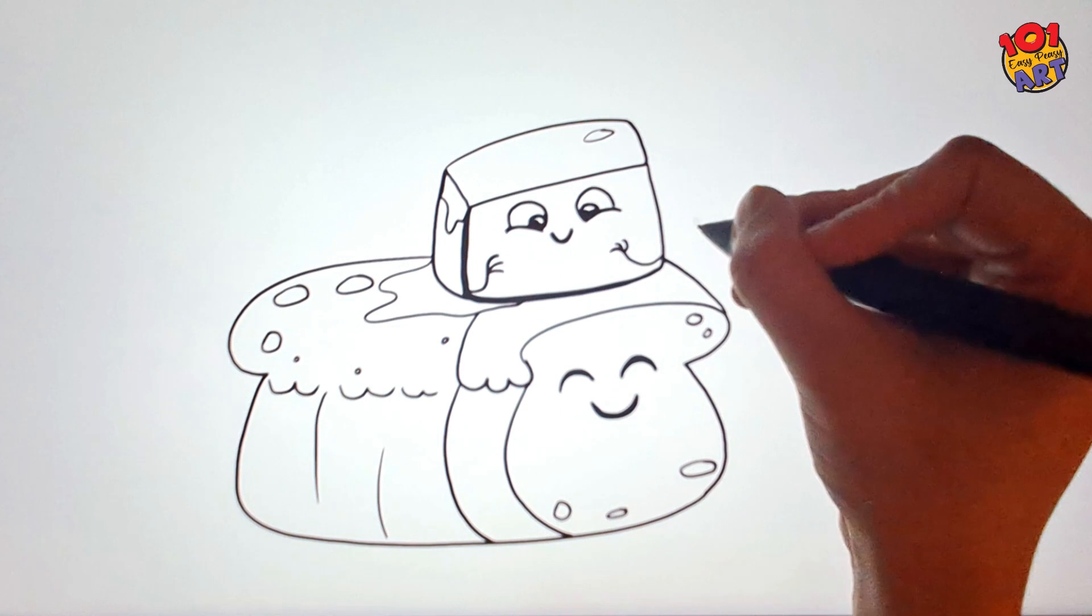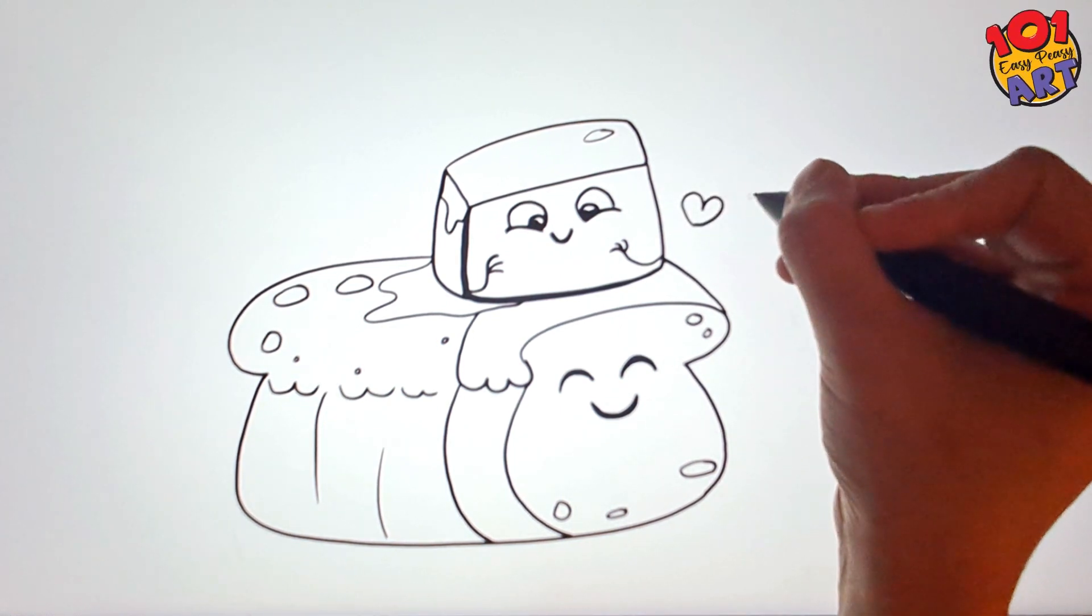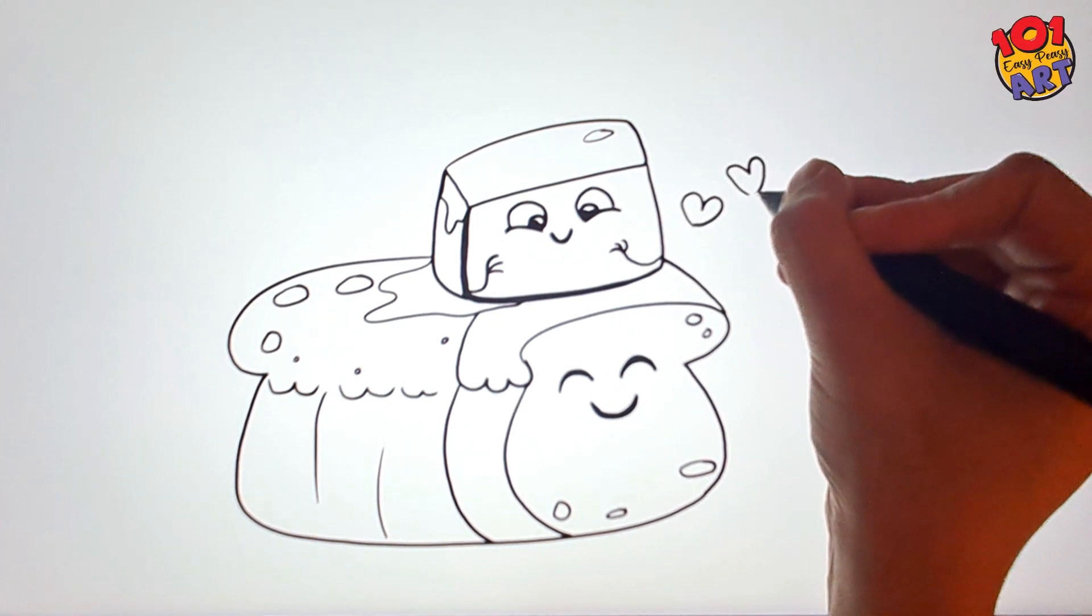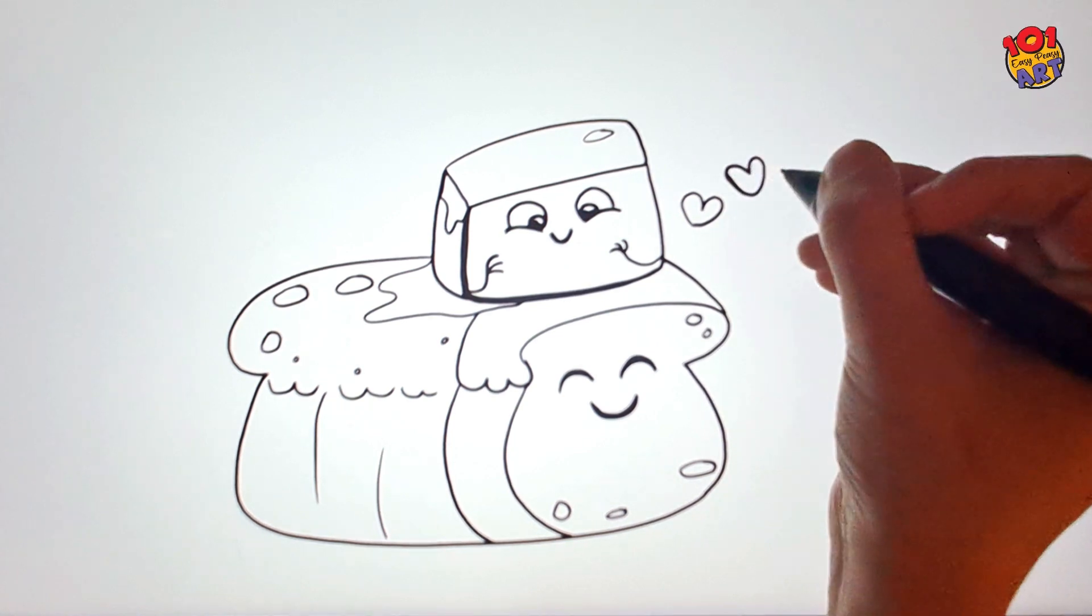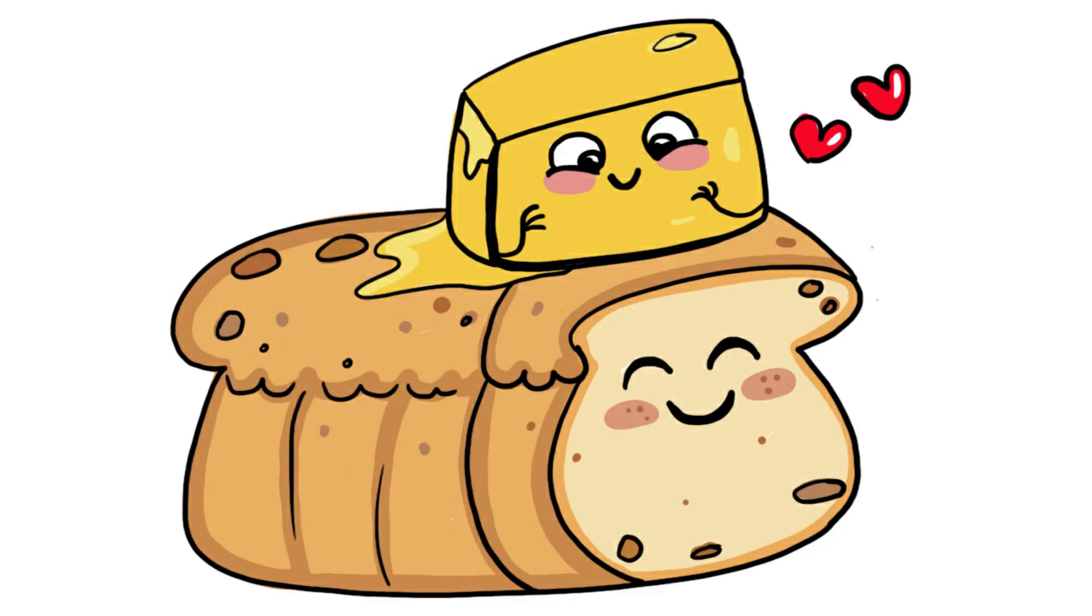And to top it off, two flying hearts to show the love this duo shares. They're just too adorable. Time to add a pop of color. Splash some fun shades onto our butter and bread and watch the magic happen.